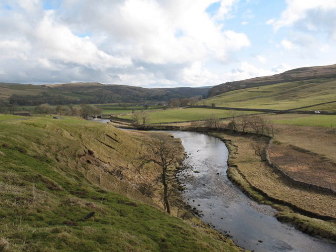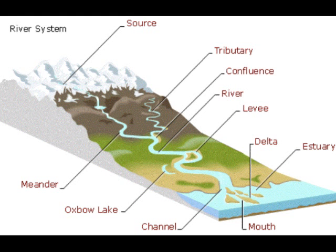There are some different types of river landforms. Landforms formed only by erosion are waterfalls and gorges. Landforms formed by erosion and deposition are meanders and oxbow lakes. Landforms formed by deposition are floodplains and levees.